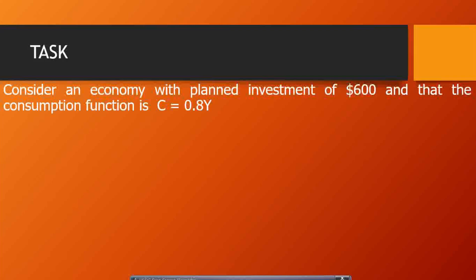What makes this unique is that our consumption function this time around has no intercept. There is no autonomous consumption in this model. What we are given is only that part of consumption that depends on income. And the 0.8 here is the marginal propensity to consume.